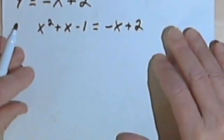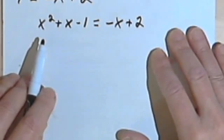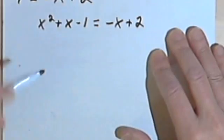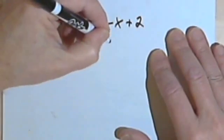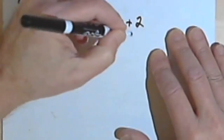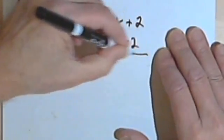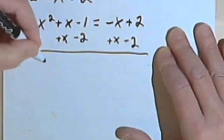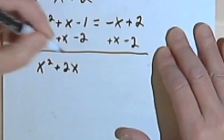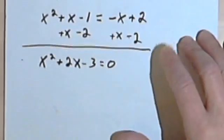And now if I collect all my terms on the left side and set all that equal to zero, I'm just gonna be solving the quadratic equation. So let's see. I've got a negative x over here, so I want to add x to both sides. And I've got a positive 2, so I want to subtract 2 from both sides. So I'm going to end up with x squared plus 2x minus 3 equals zero.